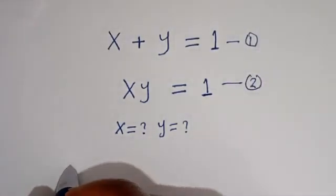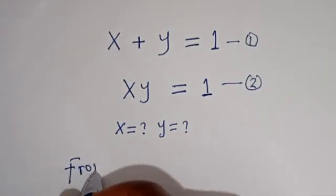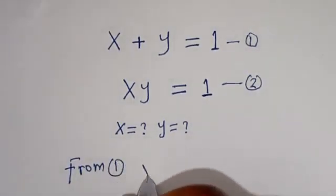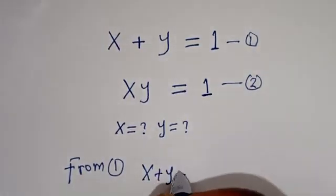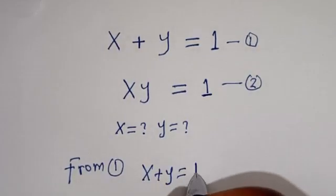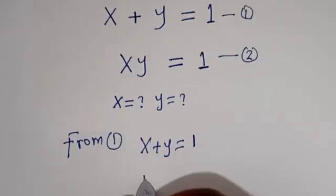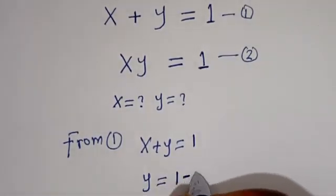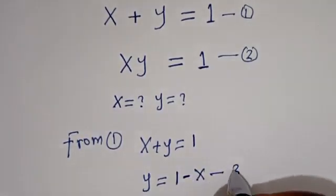From equation 1, we have S plus Y is equal to 1. Then Y is equal to 1 minus X. Let's call this equation 3.